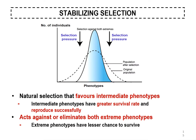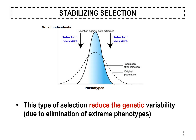Stabilizing selection is a natural selection that favors intermediate phenotypes. Intermediate phenotypes have greater survival rate and reproduce successfully because the environment is very suitable for their characteristics. It acts against or eliminates both extreme phenotypes, as extreme phenotypes have lesser chance to survive. This type of selection also reduces genetic variability because it eliminates two groups.